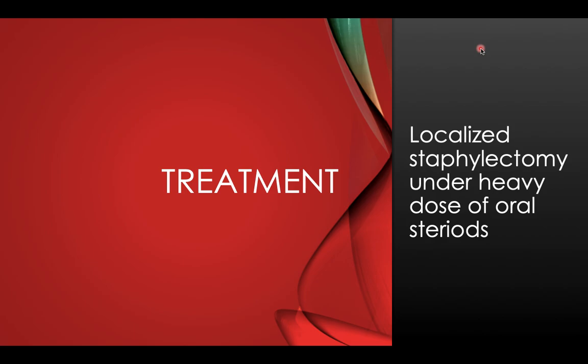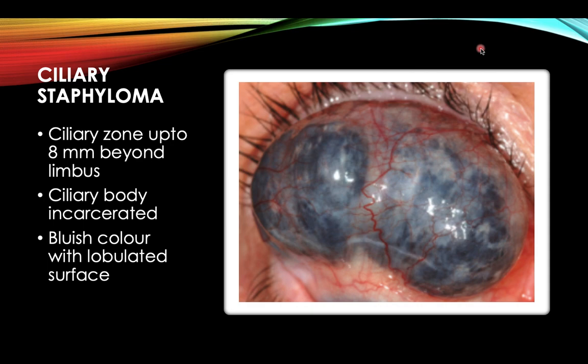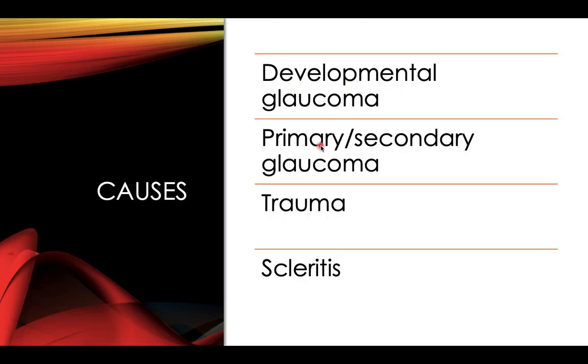The third type is ciliary staphyloma, involving the ciliary zone up to eight millimeters beyond the limbus, where the ciliary body is incarcerated. It appears bluish with a lobulated surface as seen in the picture. Causes include developmental glaucoma, primary or secondary glaucoma, trauma, or scleritis.